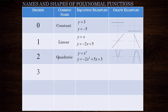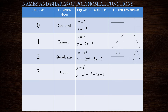Now let's move on to degree three functions — perhaps something new here. Degree three polynomial functions are called cubic functions. The most basic cubic function is y equals x cubed. For a cubic function you may also have an x squared term, an x term, and a constant term. Now the graph of y equals x cubed looks like this.